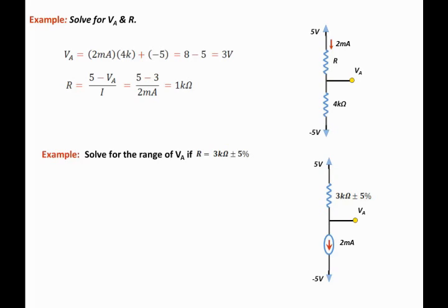Now let's calculate the minimum value first. Then R min is equal to 3k times 1 minus 0.05. That is 5% below the nominal value. This is equal to 2.85 kilo ohms.